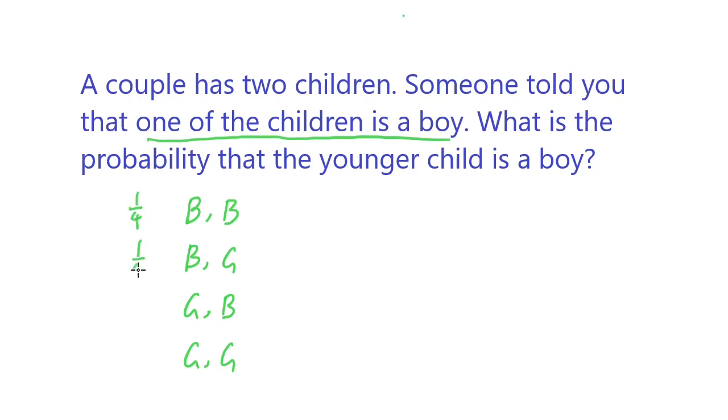Each of these has a one-fourth probability. But knowing that one of the children is a boy, notice it doesn't say there's only one boy—it just says one of them is a boy. So it could be both boys, one boy and one girl, or a girl and a boy, but it definitely cannot be two girls. This last case gets eliminated.